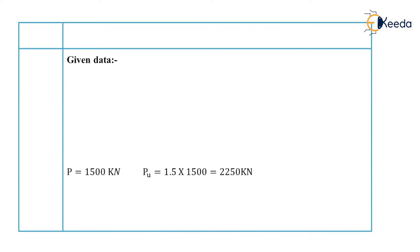So here is the given data. In the problem, it is mentioned that the column is carrying an axial load of 1500 kN therefore we will convert it into the factored load by multiplying it by a factor of safety that is 1.5. So 1.5 into P, that is 1.5 into 1500, which is equal to 2250 kN and this is our factored load.